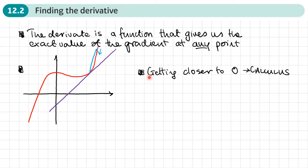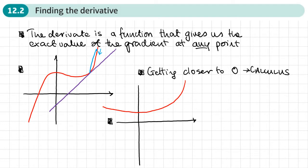This idea of getting closer to zero comes up a lot in mathematics. In this particular area, it's called calculus. So this chapter and the next chapter are called calculus. It's all based on the idea of looking at something and seeing what happens as we get closer and closer to zero — what's the pattern? So how does this all work?